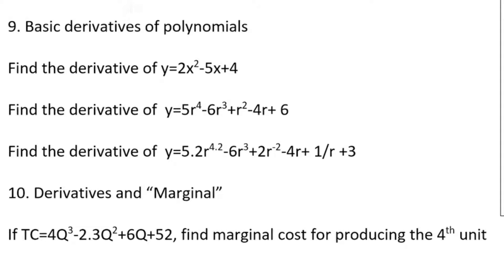Let's talk about derivatives. A derivative tells you the slope of a function at a point, or the slope of a tangent line — if we draw a line that touches a curve at one point, it tells us the slope. Remember that slope is rise over run, and another way of writing rise over run is change in y over change in x. Change in y is the rise up or down; change in x is the run going left or right.